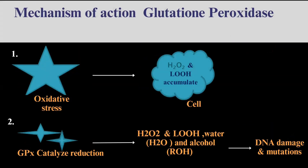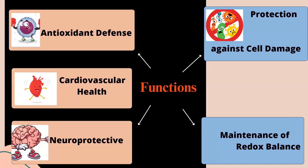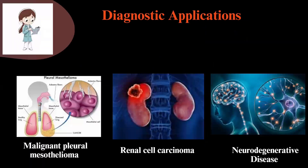The mechanism of action of glutathione peroxidase occurs in two steps. First, due to oxidative stress, hydrogen peroxide and lipid hydroperoxide accumulate in the cell. Next, glutathione peroxidase catalyzes the reduction of these into water and alcohol respectively, neutralizing reactive oxygen species and preventing DNA damage and mutation. Its functions include antioxidant defense, cardiovascular health, neuroprotection, protection against cell damage, and maintenance of redox balance.